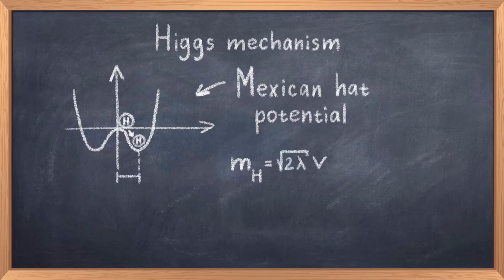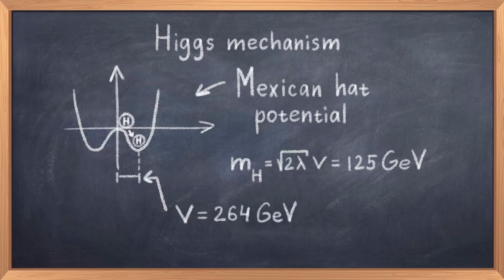Thus, when the Higgs drops down into the minima and the vacuum expectation value becomes non-zero, then the mass of the Higgs also becomes non-zero. This process is called symmetry breaking, and this explains how the weak bosons obtain their mass too, as discussed in the video about electroweak theory.